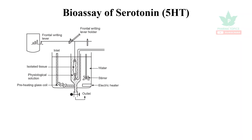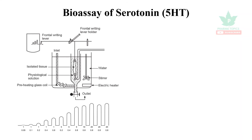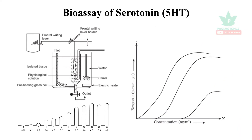The rat fundus strips are mounted in the organ bath. Recordings in the presence of the test solution and the standard serotonin are recorded on the kymograph. The responses are given in a graded manner and the height of the response is plotted against the log concentration. The concentration of the test solution is then interpolated in the log concentration curve of the standard.